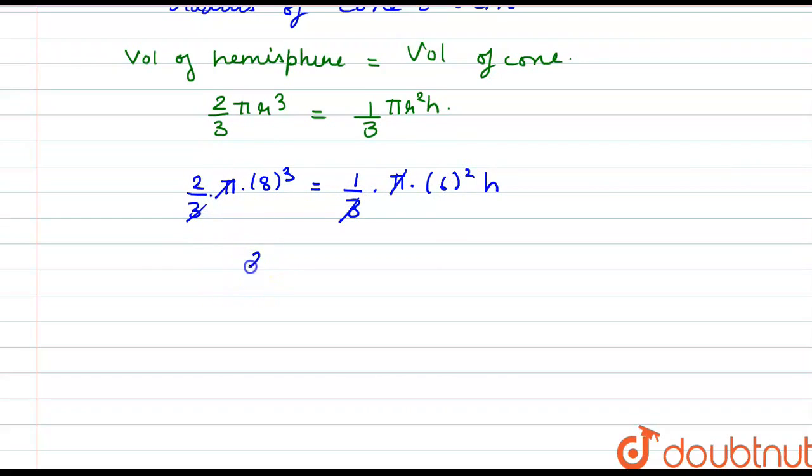So the remaining value is 2 into 8 cube is equal to 6 square into h. So from here we have the value of h as 2 into 8 cube divided by 6 square. So h comes out to be 28.44 cm.